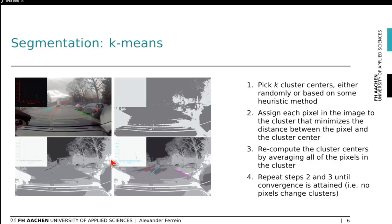Another approach for image segmentation is k-means clustering. The idea is to pick a number of clusters, either randomly or based on heuristics, assign each pixel to the cluster that minimizes the distance between the pixel and the cluster center, then recompute cluster centers by averaging over assigned pixels, and repeat until convergence. In the street scene example, k-means clustering with two, four, and eight clusters reveals regions of interest on which further operations can be performed.